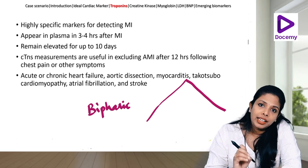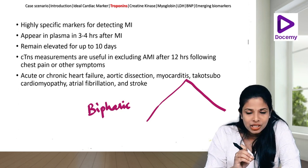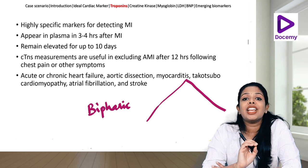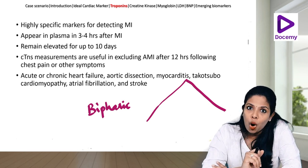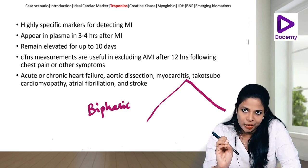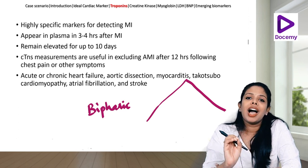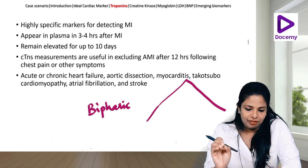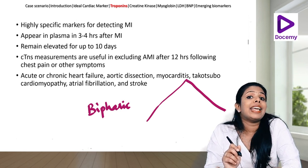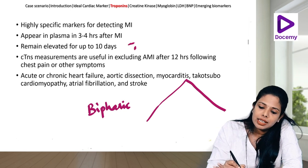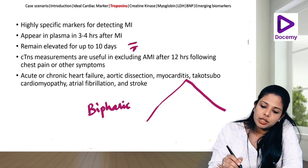The ESC and AHA criteria for the diagnosis of MI include as a first criterion: elevation in troponin levels above the 99th percentile, along with symptoms and signs of myocardial ischemia. Troponin positivity is essential for the diagnosis of acute myocardial infarction. Usually, they appear 2 to 4 hours after an acute MI and remain elevated 7 to 10 days after the occurrence.